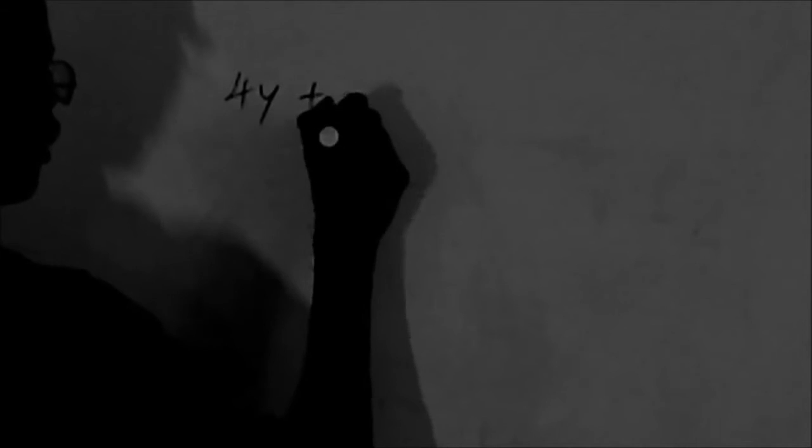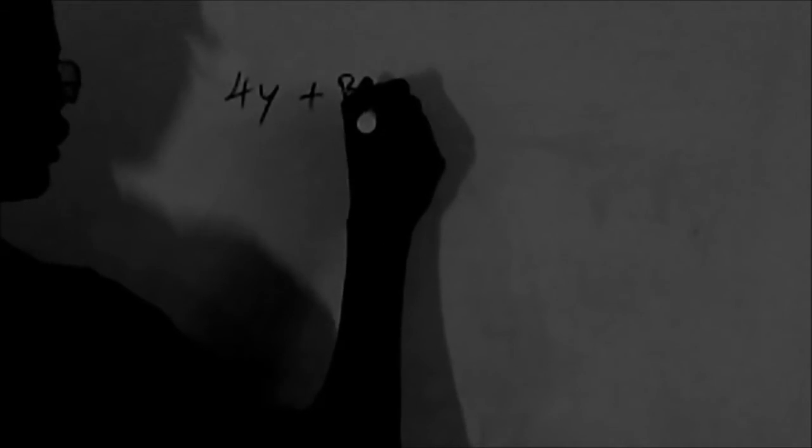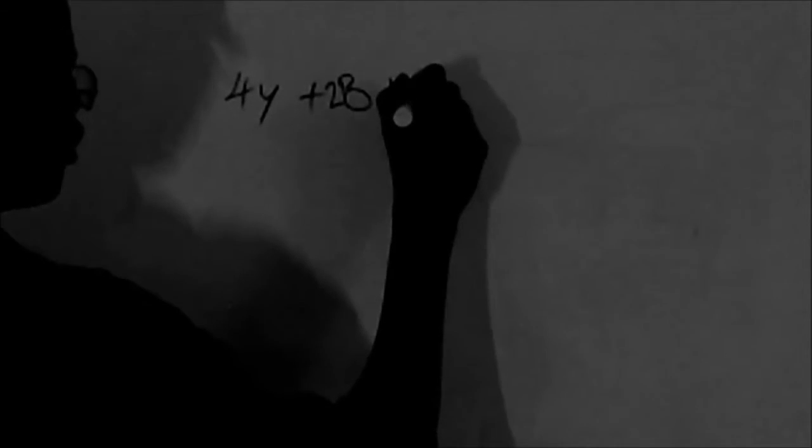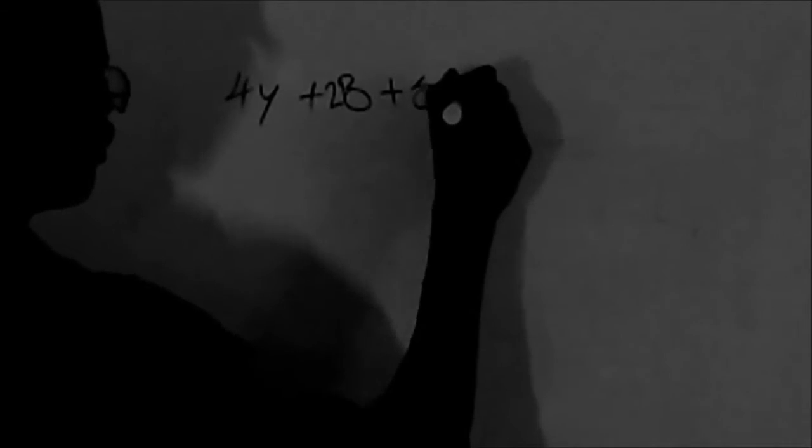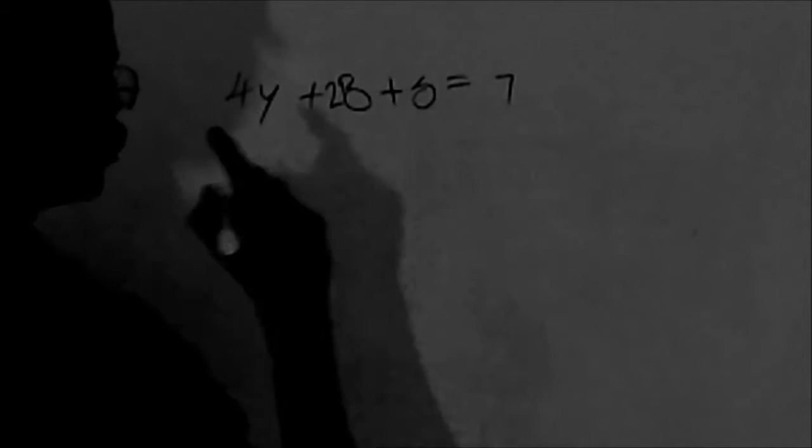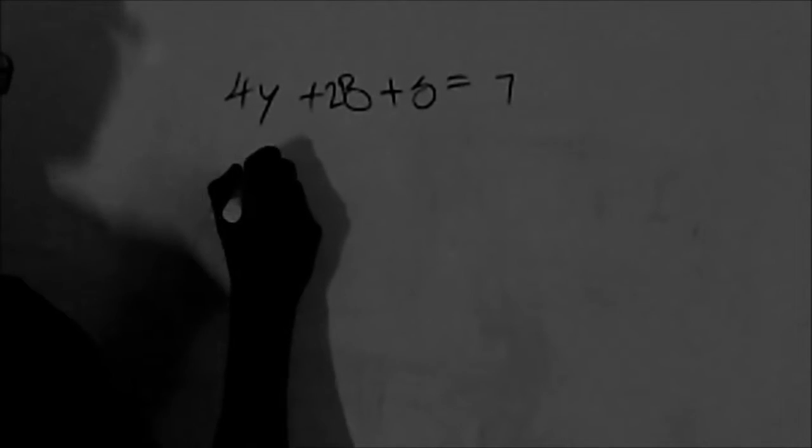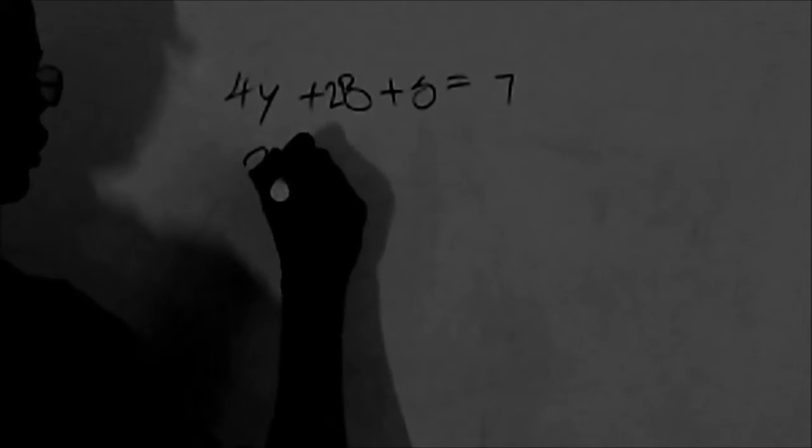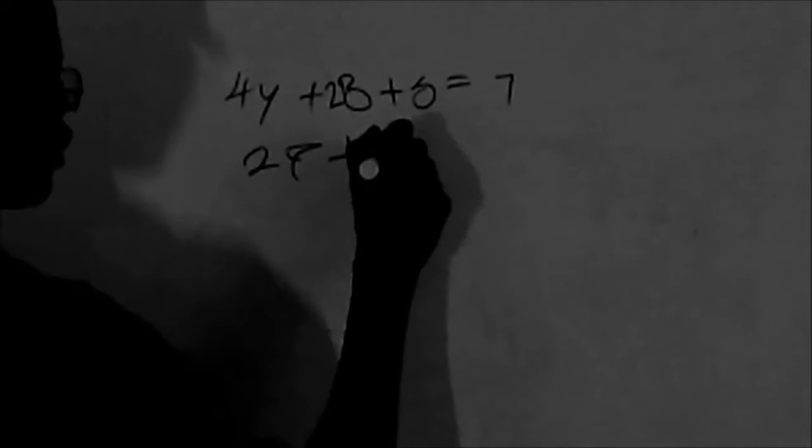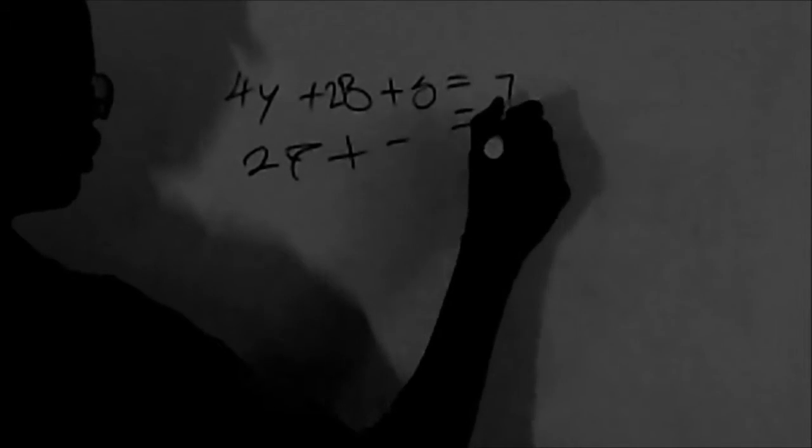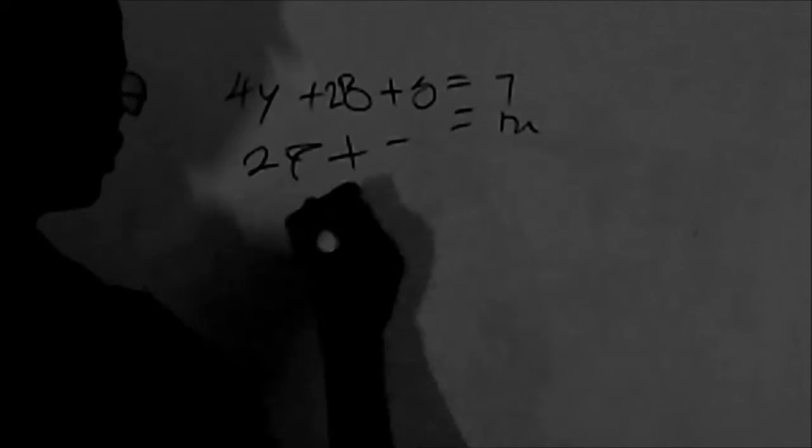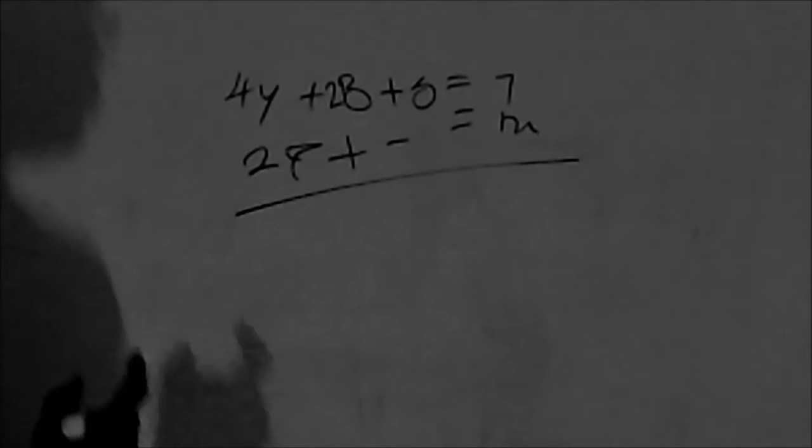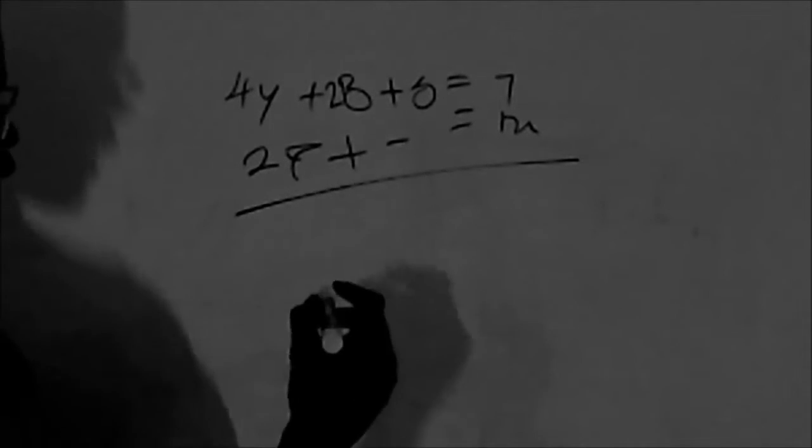We have 4y minus 2b plus 5 equals 7, and 3 plus 4 equals 6, and the rule applied here...